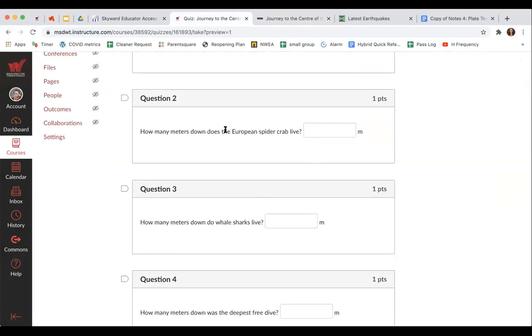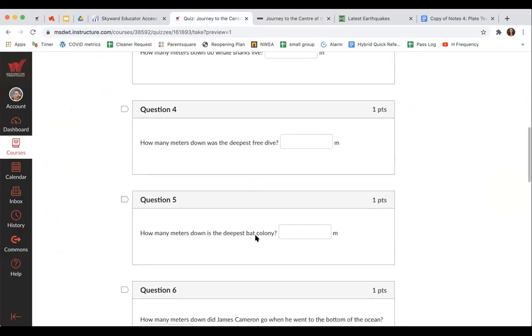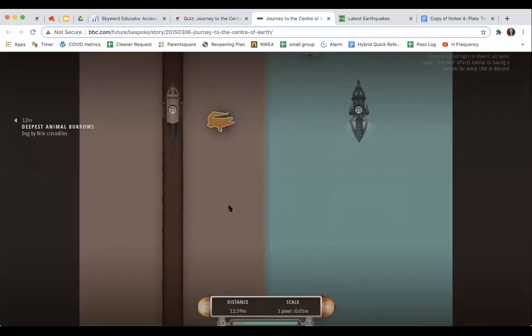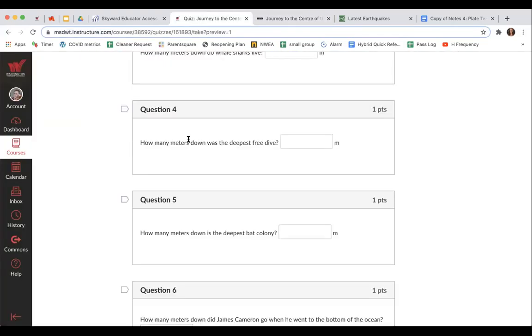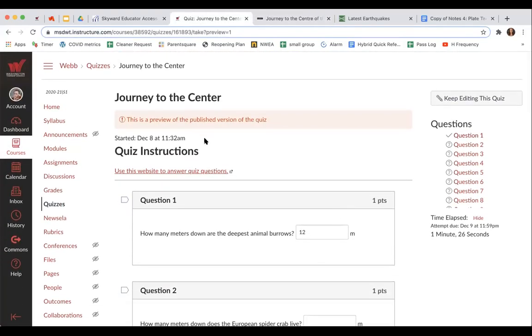Now you're going to keep going. Next one you're looking for is European spider crab. This one is going to come before whale sharks, so if you find whale sharks you've gone too far. Take your time, scroll and read everything or it's going to take you a long time. Hopefully you get at least 10 out of 12 points. That's it for today. Good luck, let me know if you have any questions and I'll see you next time.